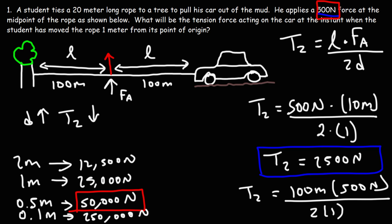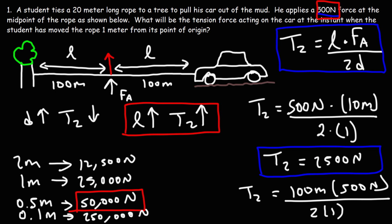As he moves the car out of the mud the force gets weaker and weaker. The best thing he can do to maximize tension force is to use a very long rope — as L increases, the tension force pulling the car out of the mud increases. So that's how you pull a car out of the mud: get a very long rope, attach it to a tree, and instead of pulling the car directly, apply a force perpendicular to the rope and let the tree do the work of pulling the car for you using leverage.